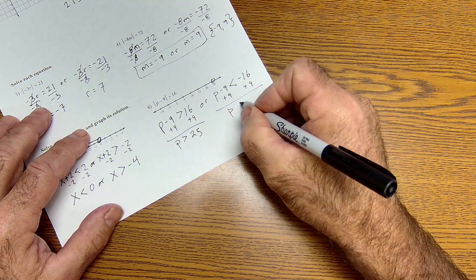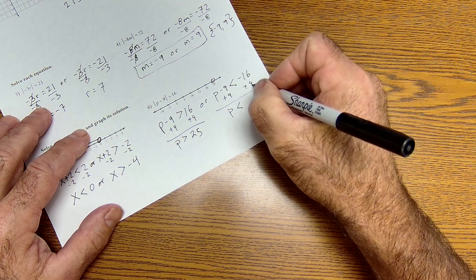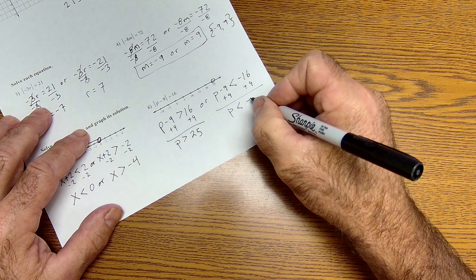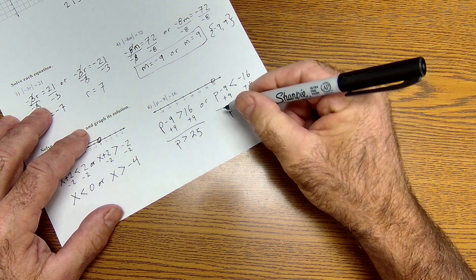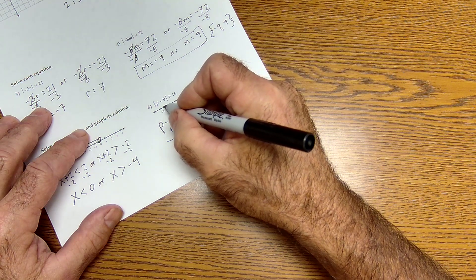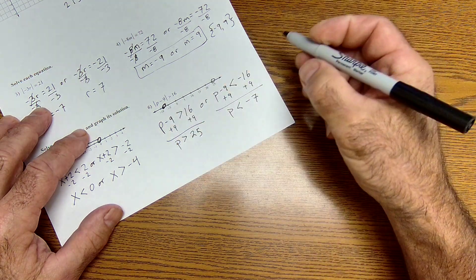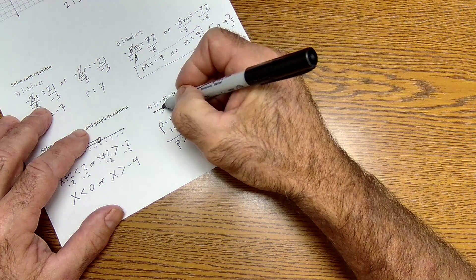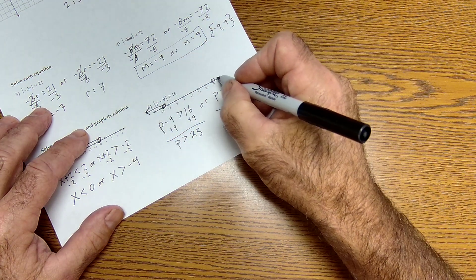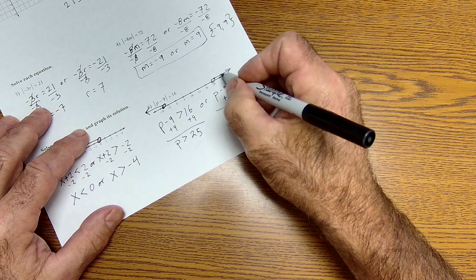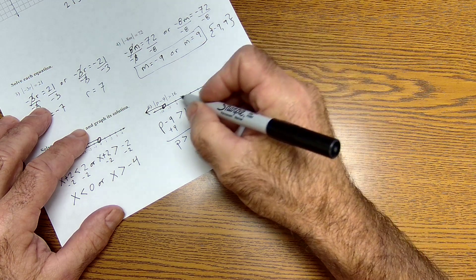p is by itself, less than negative 16 and 9 is negative 7. So p is less than negative 7. Negative 7 would be right here. Again, an open circle. It's everything less than, so it's that away. And then this one, p is greater than 25, is that away. So that's what it looks like graphically. And that's what it looks like algebraically.